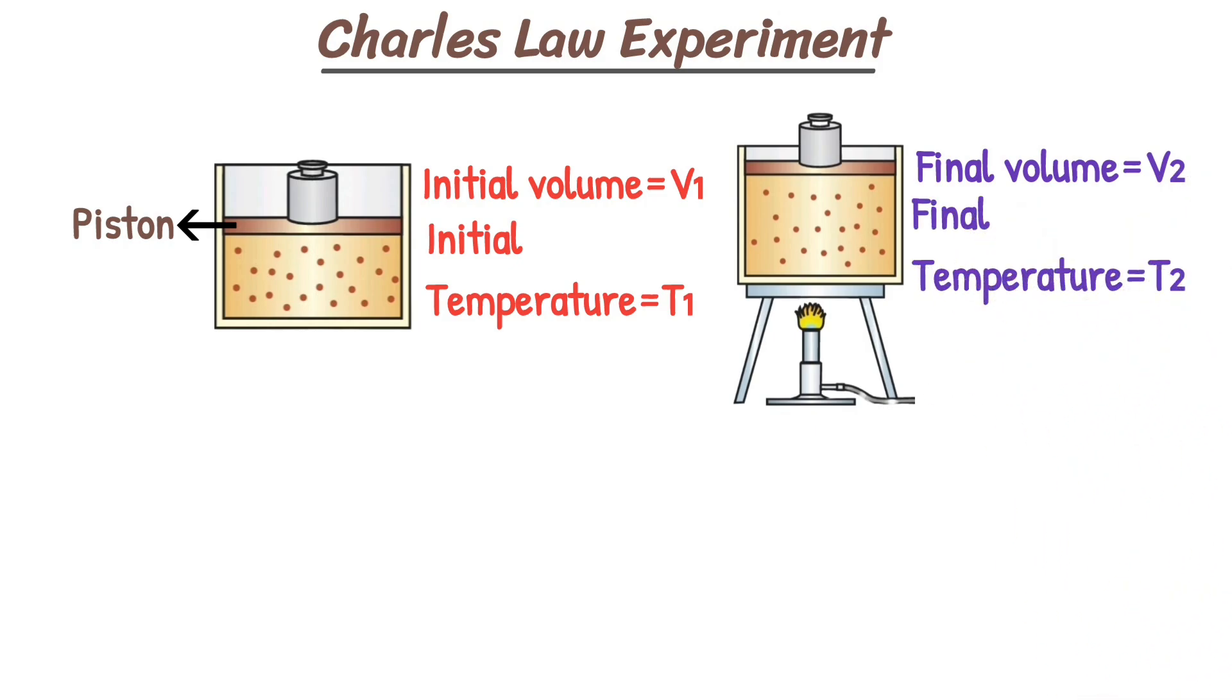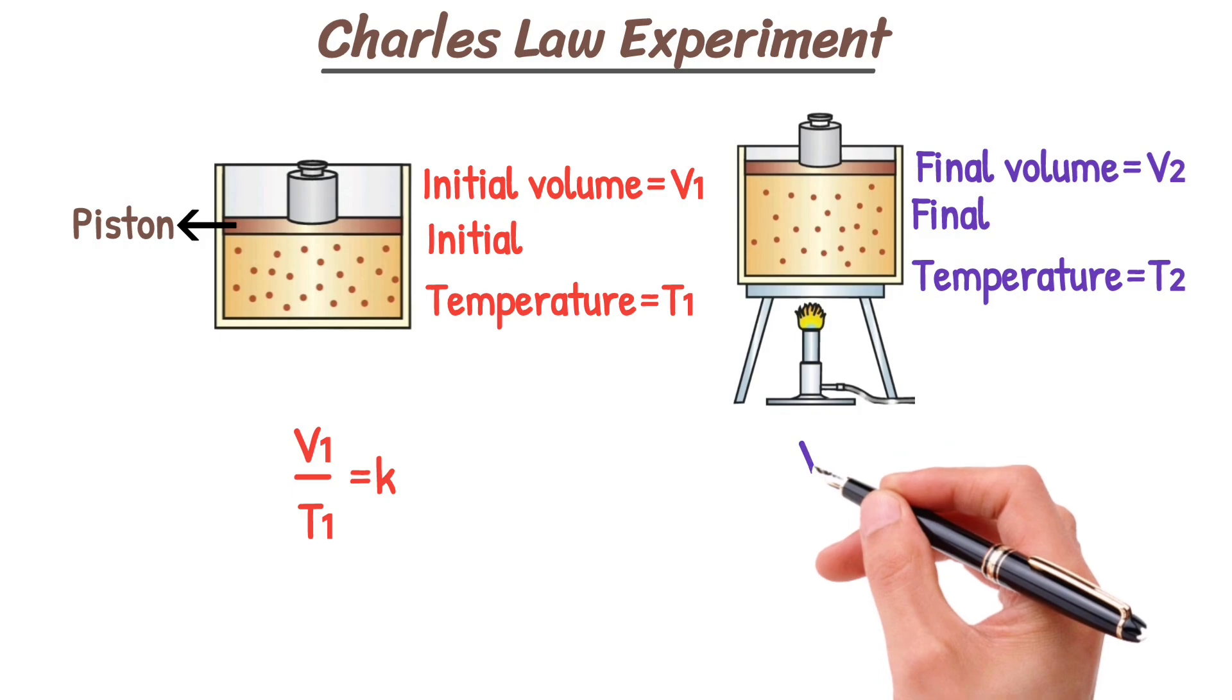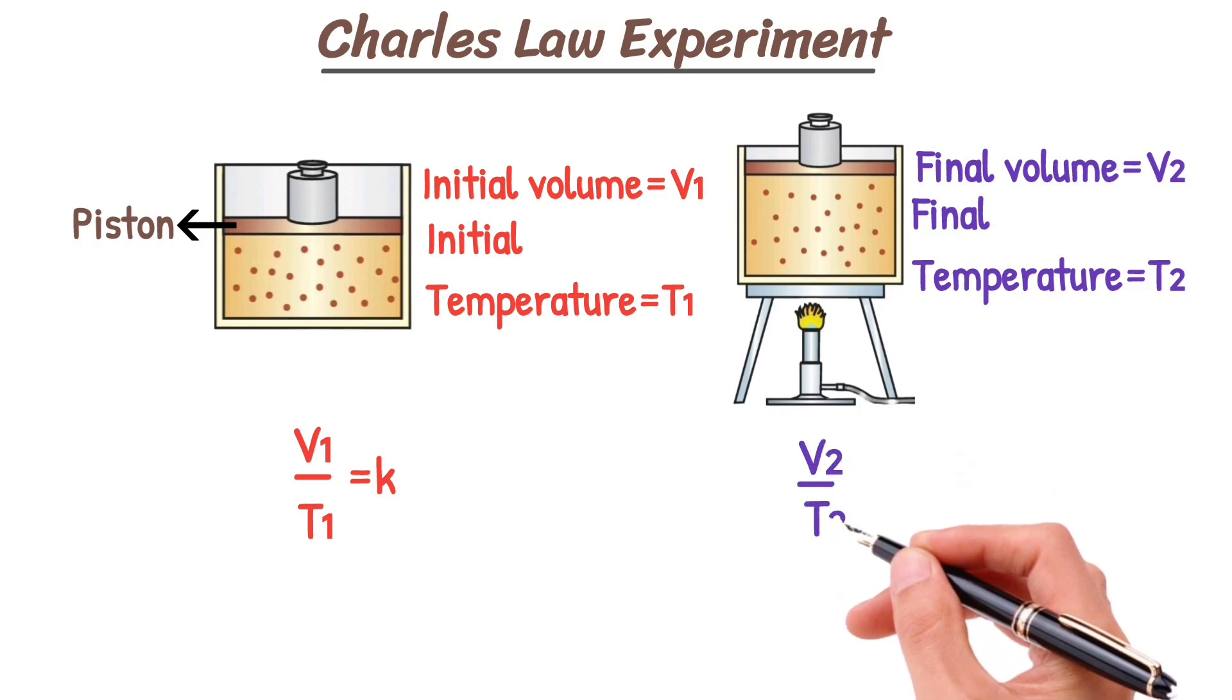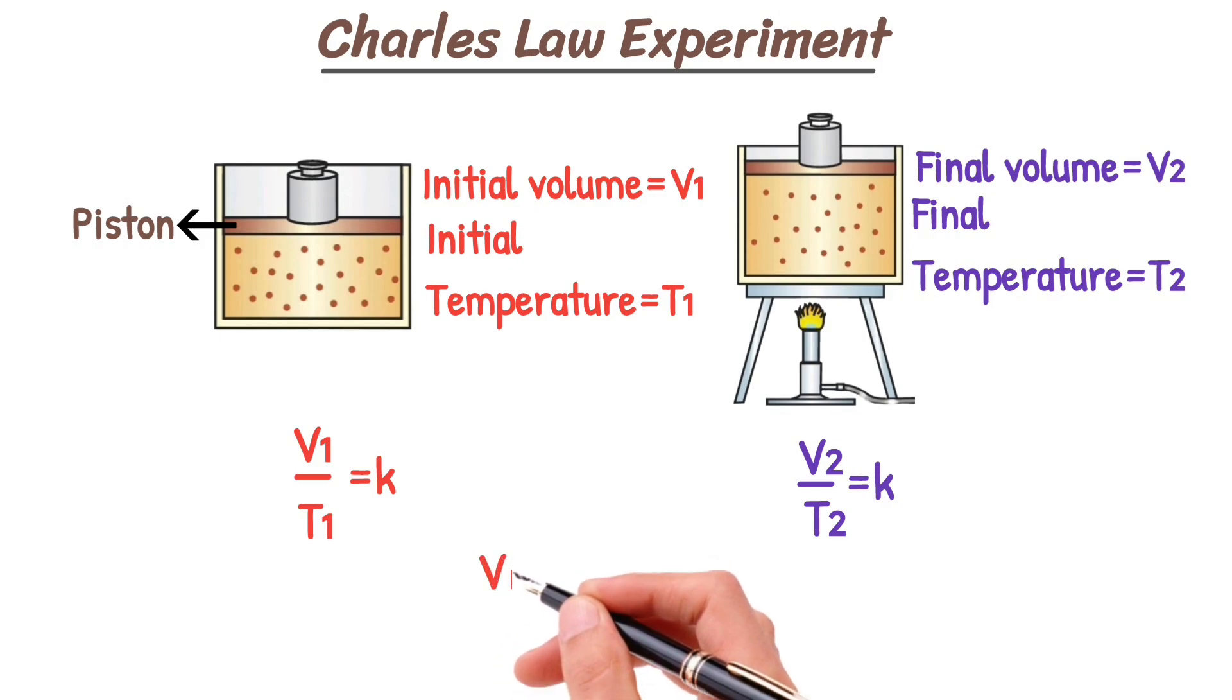According to Charles's Law, we can write the equation as V1 over T1 equals K, and V2 over T2 equals K. So by equating the above equations, we get V1 over T1 equals V2 over T2. That is the final derivation of Charles's Law.